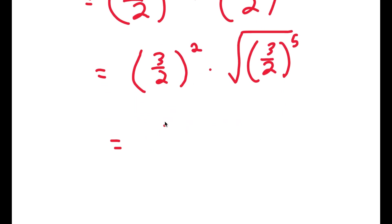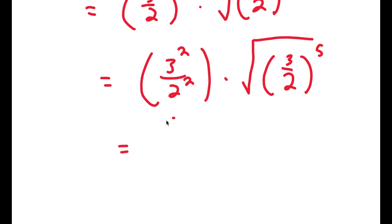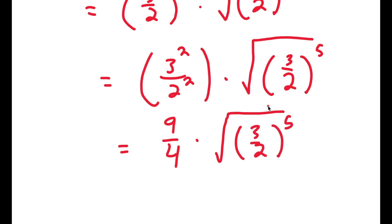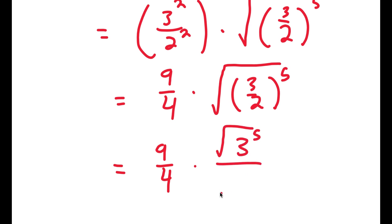And 3 over 2 squared is the same thing as 3 squared over 2 squared. So 3 squared is 9, and 2 squared is 4, so I get 9 over 4 times the square root of 3 over 2 to the power of 5. Now I'm going to rewrite the square root of 3 over 2 to the power of 5 by dividing into the numerator and the denominator: 9 over 4 times the square root of 3 to the power of 5 over the square root of 2 to the power of 5.